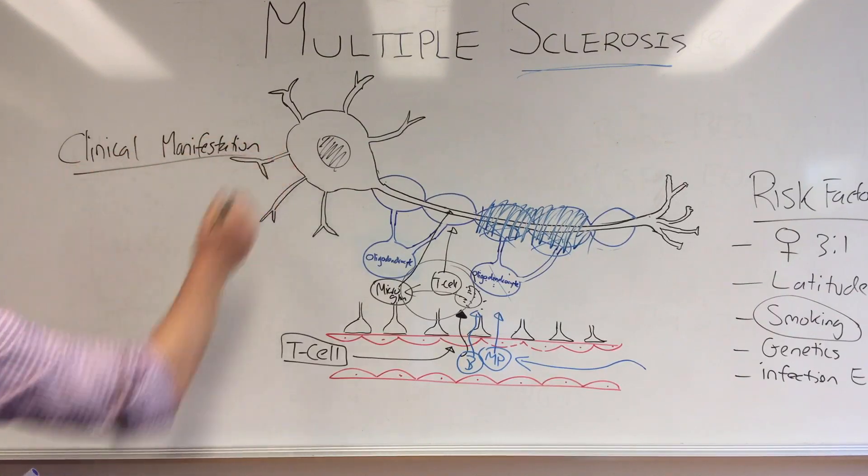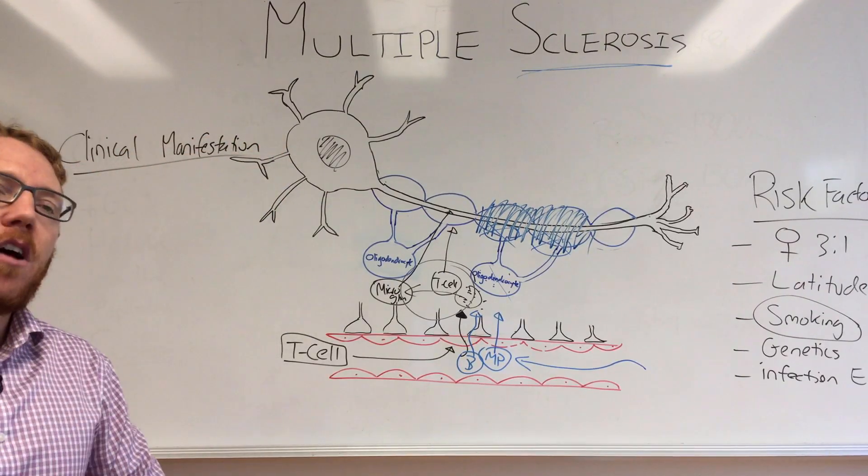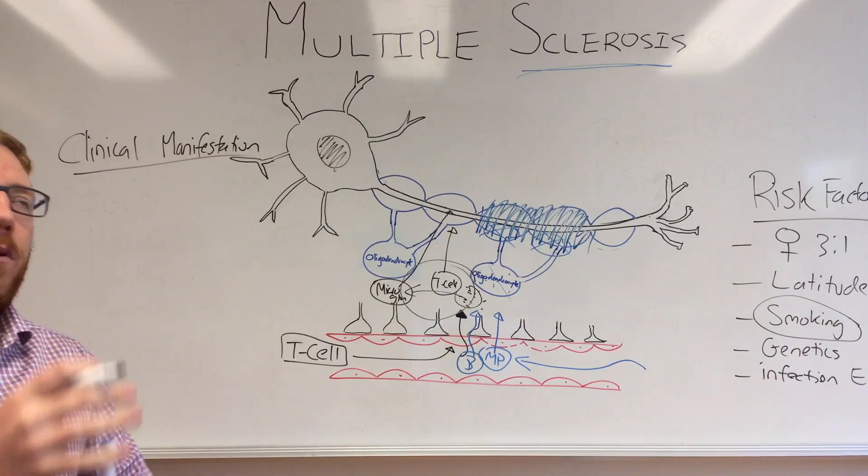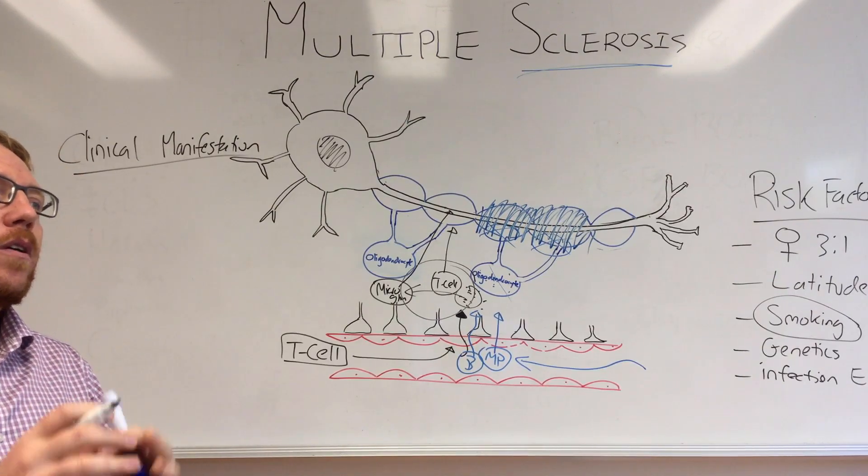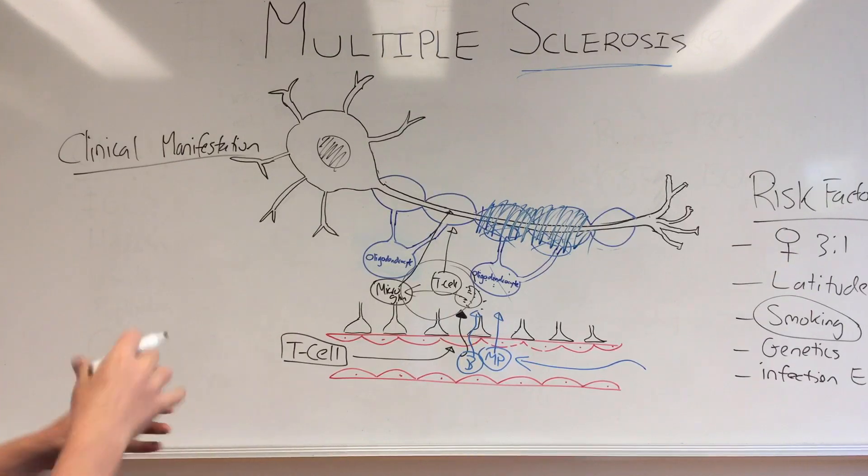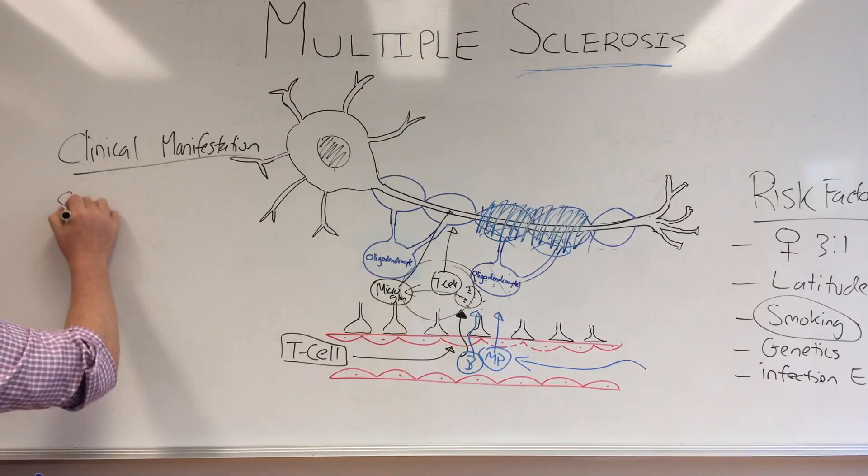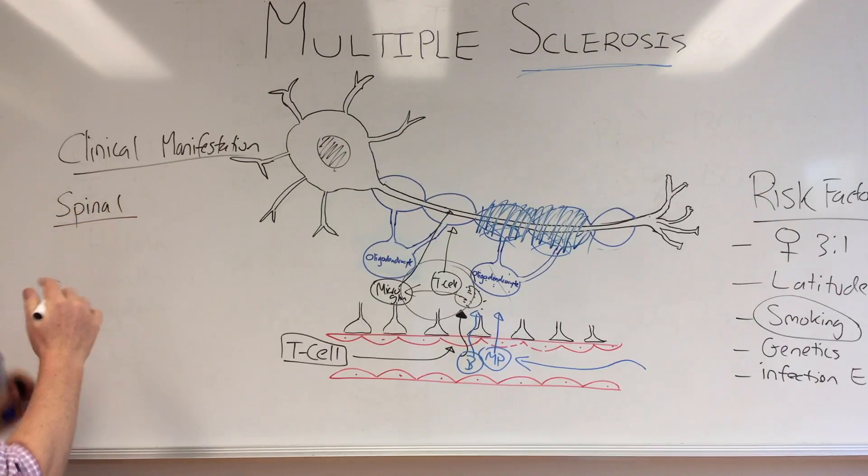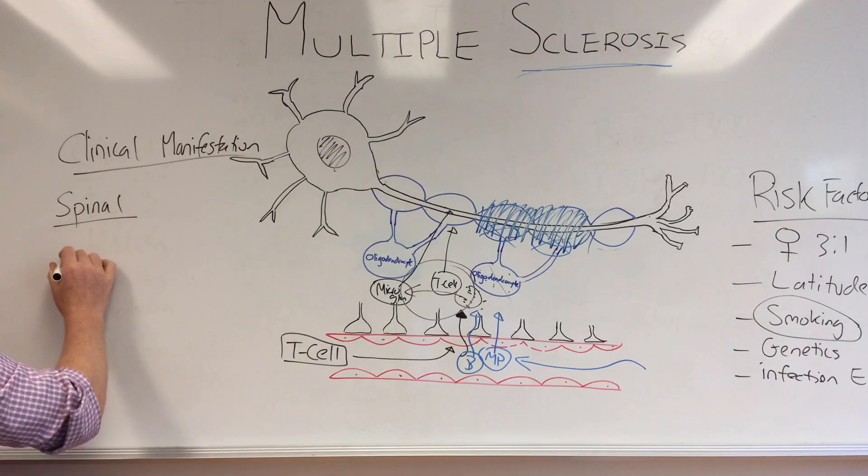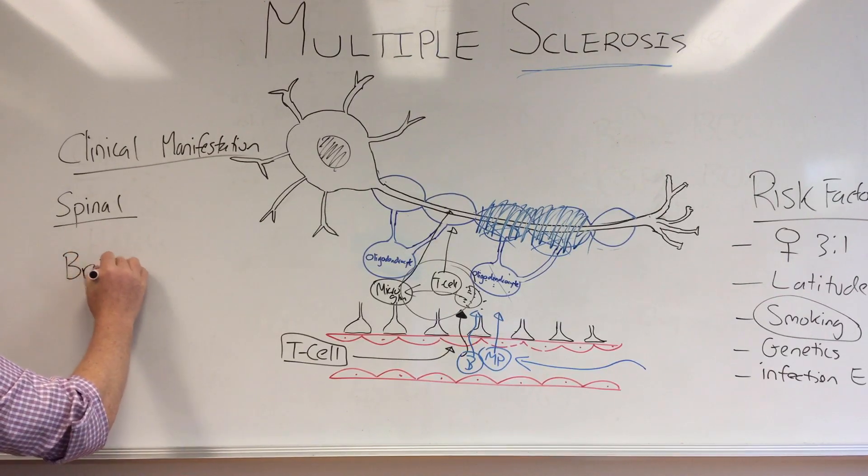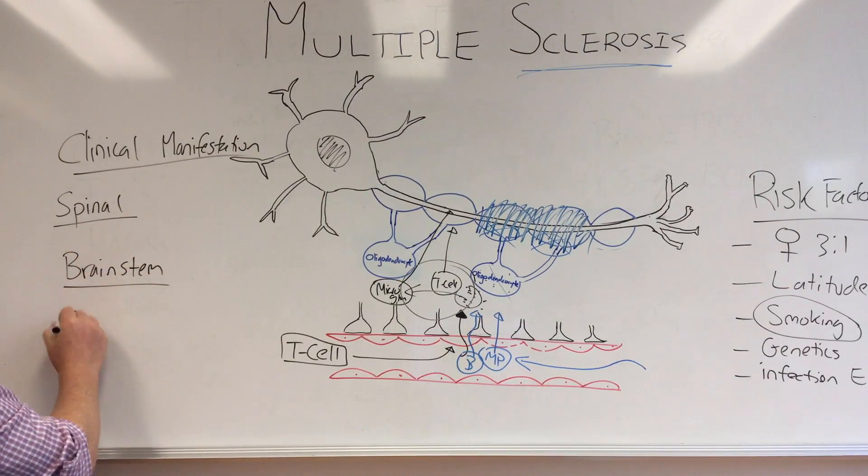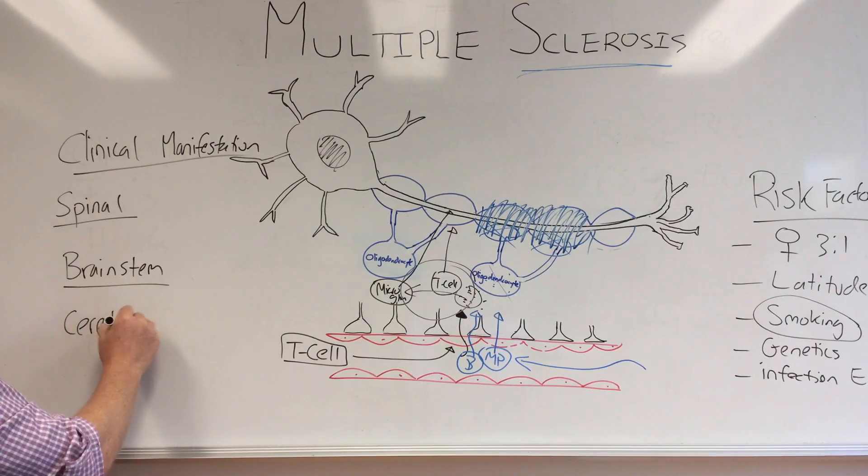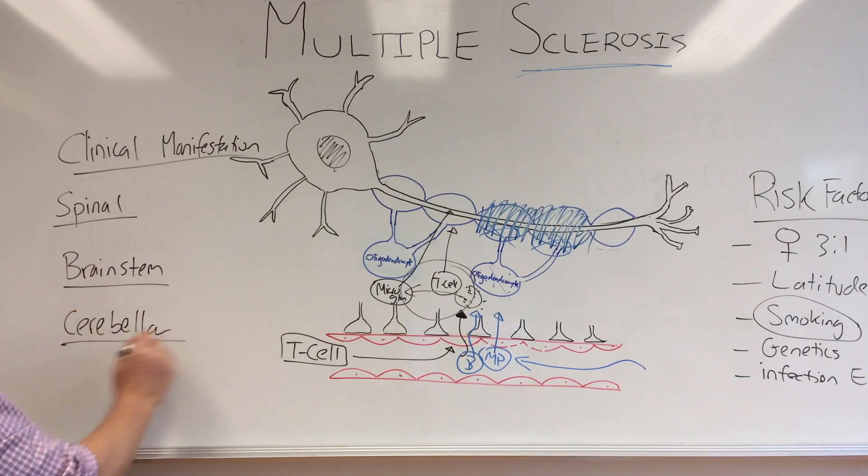Rather than list all the symptoms that come about, what I thought I would do is put them into syndrome categories because a lot of them will fit into these areas. We have a spinal syndrome, we have brainstem, we have cerebellar, and we have cerebral.